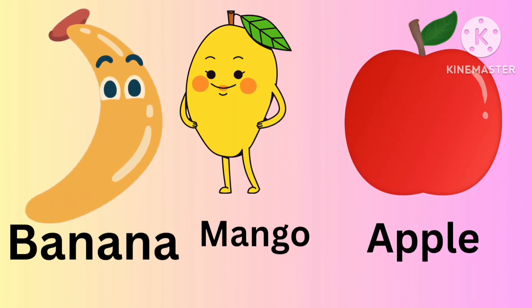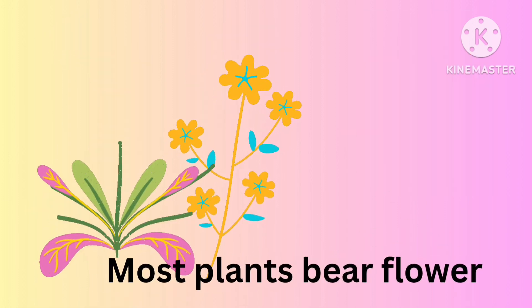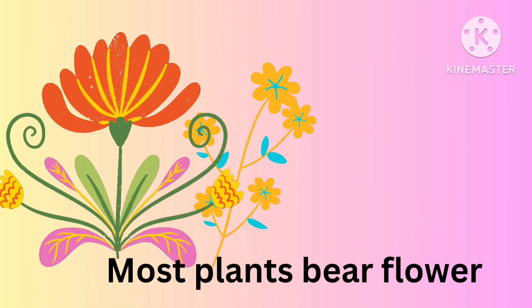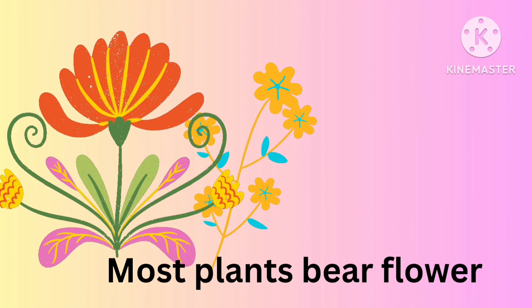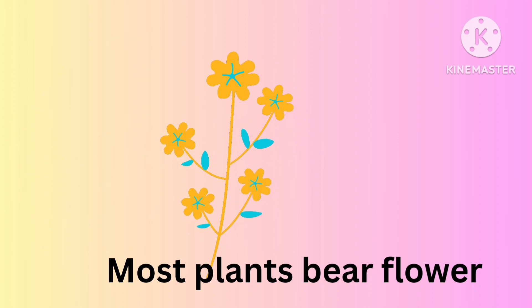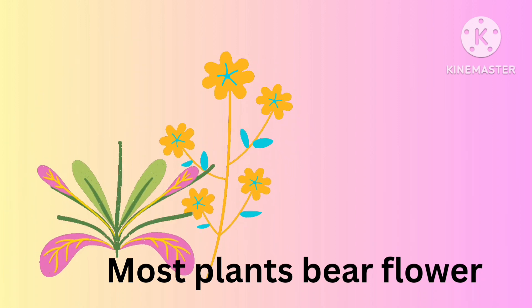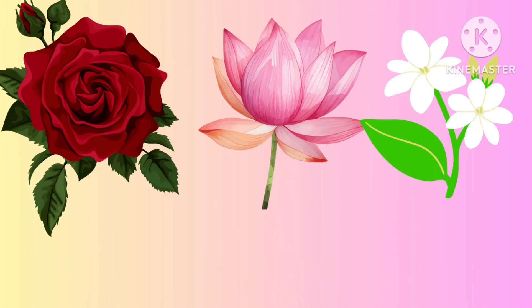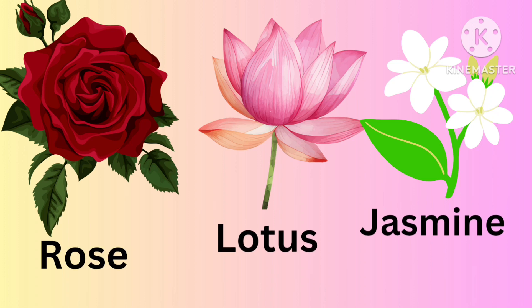Some of the fruits we like are banana, mango, and apple. Most plants bear flowers. Some of the flowers we like are rose, lotus, and jasmine.